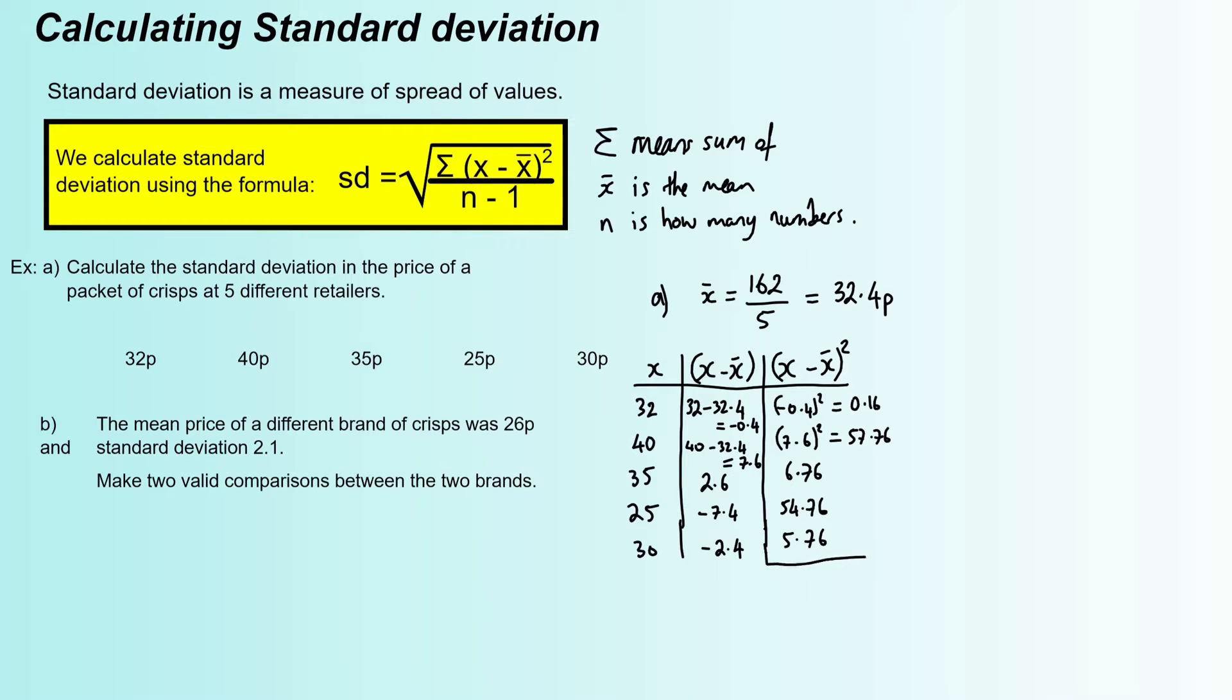Now, what we're going to do at the bottom of this column is we're going to total these up. If we do that, just type them all into the calculator, we get 125.2. Now, what that is, is that's the total of the (x - x̄)². Or in other words, the sum of the (x - x̄)². So that value there is our top line.